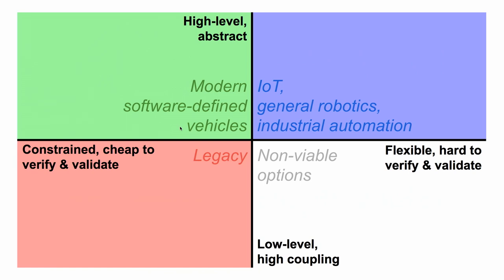We have several broad categories here. As you can see, the upper left corner is dedicated to modern software-defined vehicles, and that is something we are actually targeting. We can add some protocols here. RC PWM and DDS are vastly different, and you can see it reflected in this model. RC PWM and similar basic analog protocols are very cheap to validate because they are simple and predictable. Unfortunately, their level of abstraction and communication features is too limited.